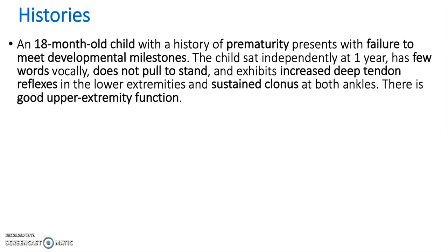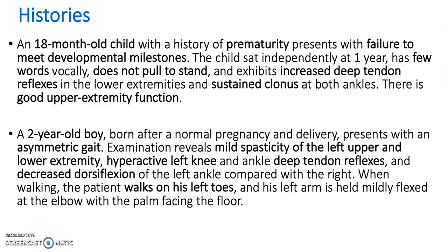Here is an example case history. An 18-month-old child with a history of prematurity presents with failure to meet developmental milestones. The child sat independently at one year, has few words vocally, does not pull to stand, and exhibits increased deep tendon reflexes in the lower extremities and sustained clonus at both ankles. There is good upper extremity function. A second case: a two-year-old boy, born after a normal pregnancy and delivery, presents with an asymmetric gait. Examination reveals mild spasticity of the left upper and lower extremity, hyperactive left knee and ankle deep tendon reflexes, and decreased dorsiflexion of the left ankle. When walking, the patient walks on his left toes and his left arm is held mildly flexed at the elbow with the palm facing the floor.